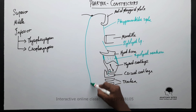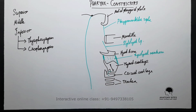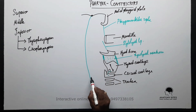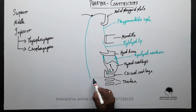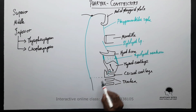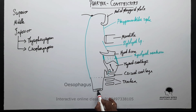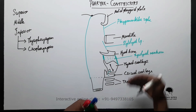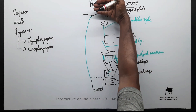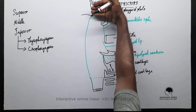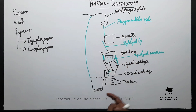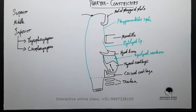The pharyngeal raphe extends down from the pharyngeal tubercle, and below the level of the cricoid cartilage it continues further. So basically, the pharynx is between the base of skull and the lower border of the cricoid cartilage.